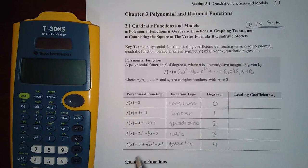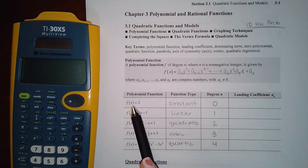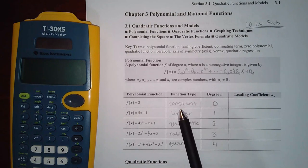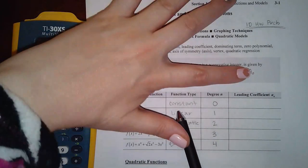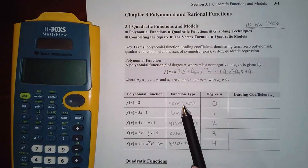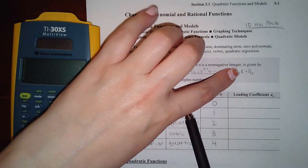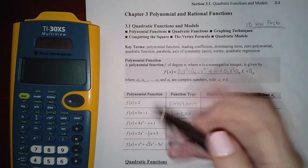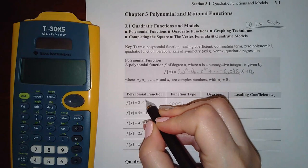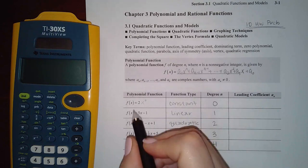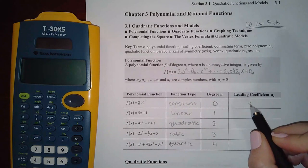The first example in the polynomials section is f(x) = 2, which is called a constant function — just one term by itself. That term is considered to have an exponent of x to the zero, and the leading coefficient in front of it is just two.